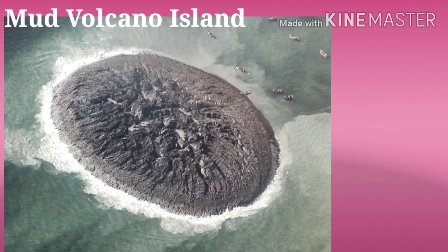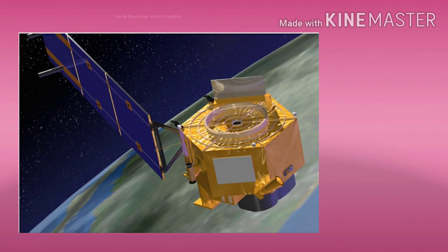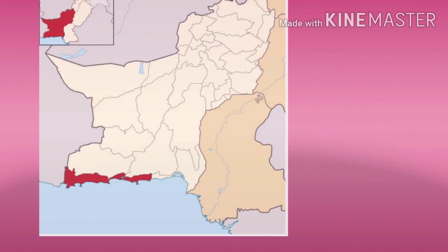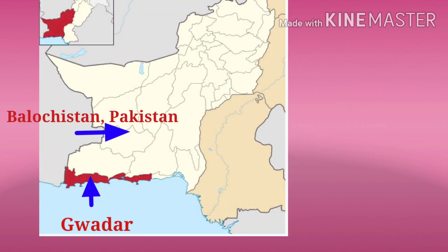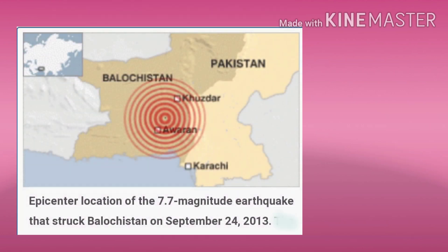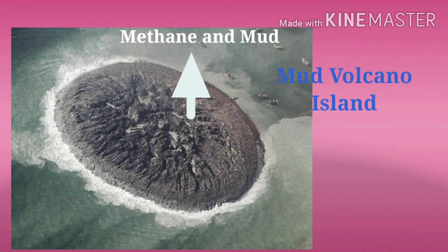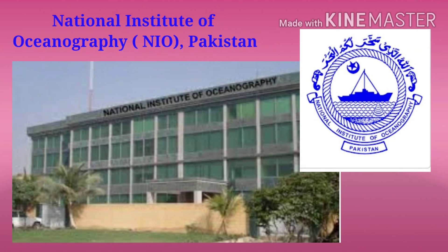The last and most significant island is Mud Volcano Island. NASA's Earth Observing One Satellite captured the birth of a new island off the coast of Gwadar in Balochistan, Pakistan, after an earthquake of about 7.8 on the Richter scale on 24th September 2013. The island is oozing out methane and mud, therefore it is named Mud Volcano Island, and this has been confirmed by the National Institute of Oceanography, Pakistan.